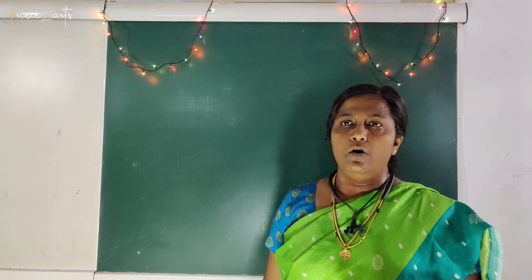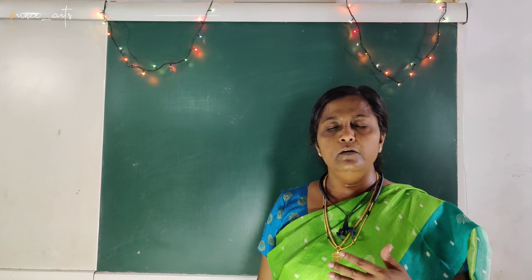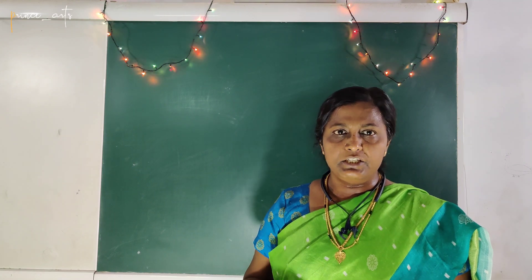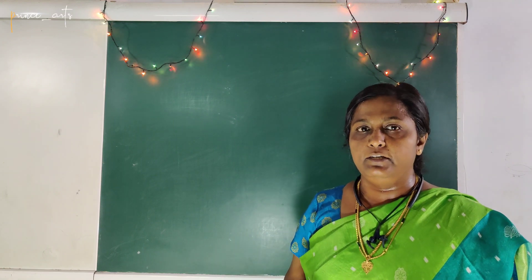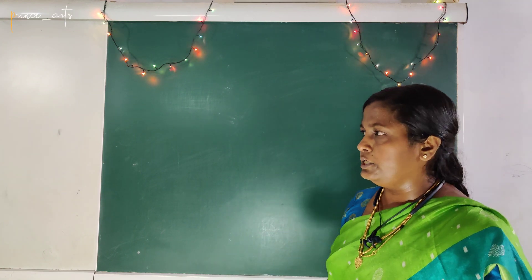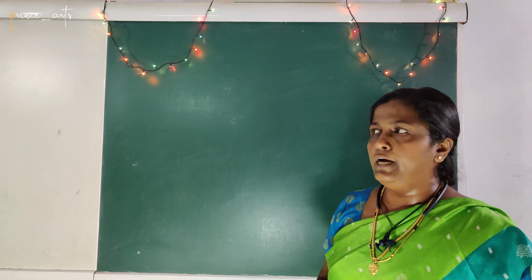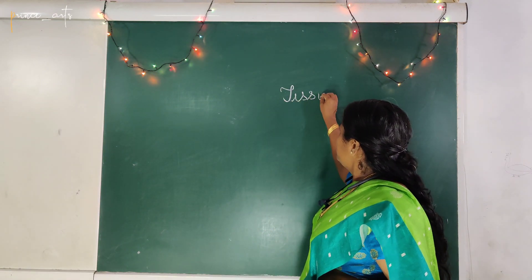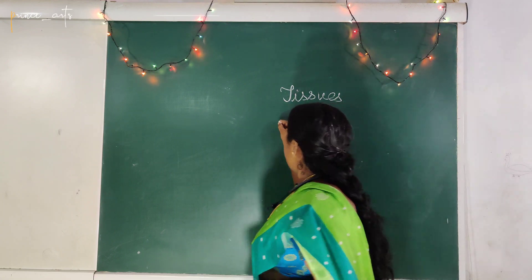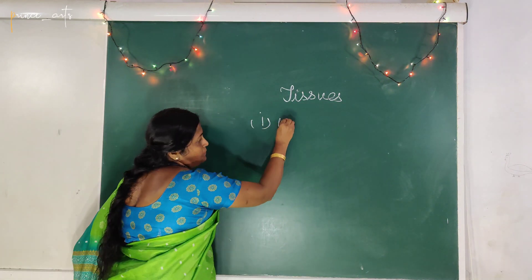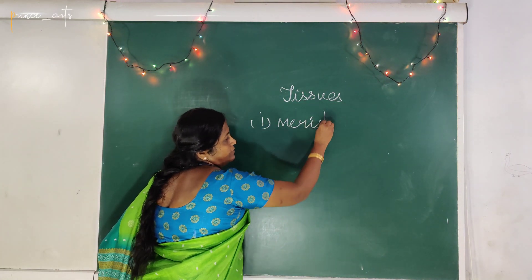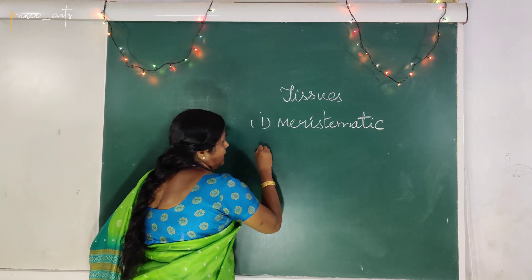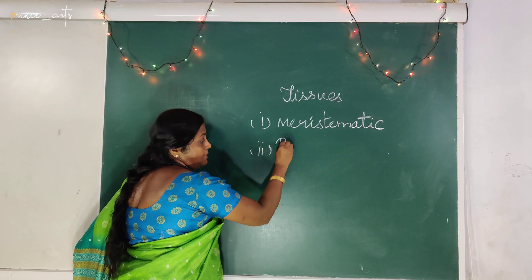Now, it is organized into one structure and performs different functions. Those are called tissues. Tissues can be broadly classified into two types: meristematic and permanent.